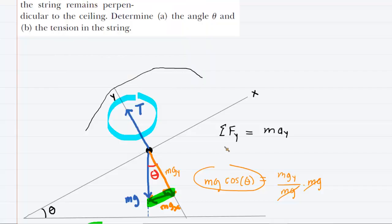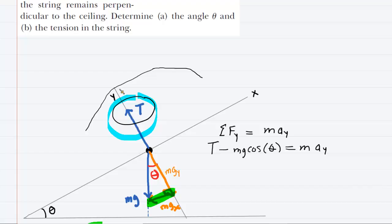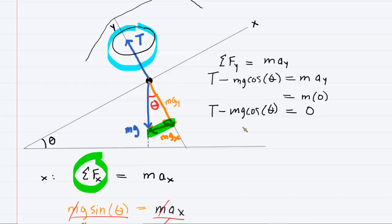Writing the sum of forces in the y direction: positive tension minus mg cosine theta equals mass times acceleration in the y direction. The toy is not accelerating in the y direction — not toward the ceiling or the floor — so the acceleration in y is zero, making the right-hand side zero. To solve for tension, we add mg cosine theta to both sides, giving us: tension equals mg cosine theta.